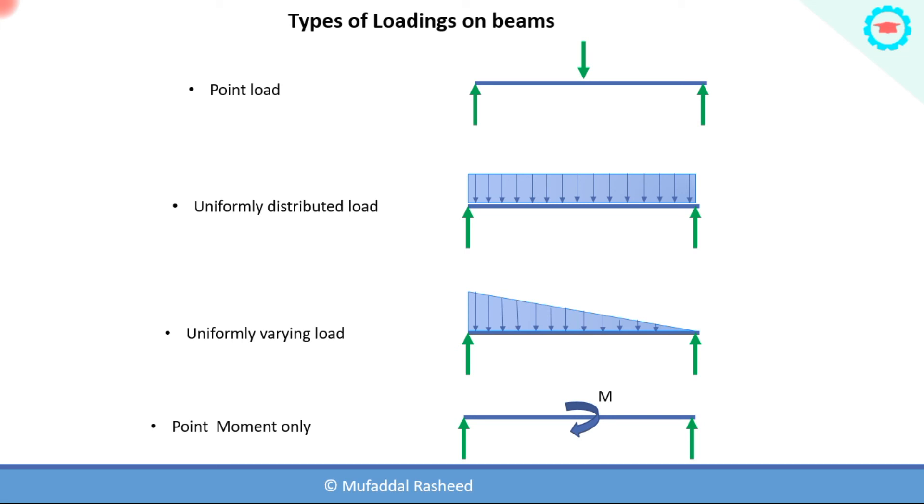An example of uniformly varying load is hydrostatic pressure in a tank. If you are considering the tank, the hydrostatic pressure will be maximum at the bottom and zero at the top. That is an example of uniformly varying load. The walls of the tank will undergo a uniformly varying load.